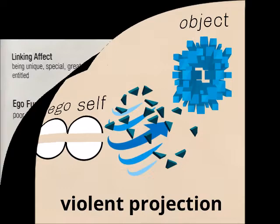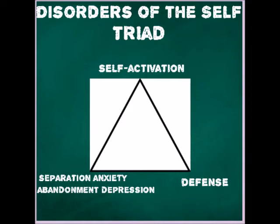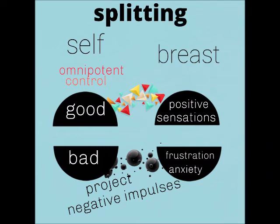Keep in mind, all of this description of the depressive position is the abandonment depression that Masterson is talking about when describing the disorders of the self-triad, where self-activation leads to anxiety and depression, which then leads to defense. In essence, the borderline, narcissist, and schizoid are avoiding these feelings as if their lives depended on it, much like the infant does in the paranoid-schizoid position.